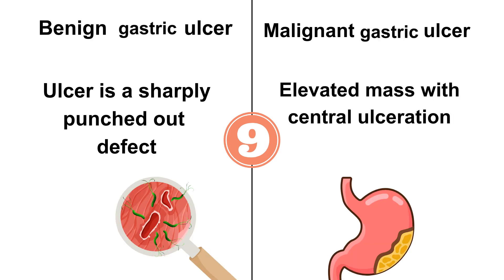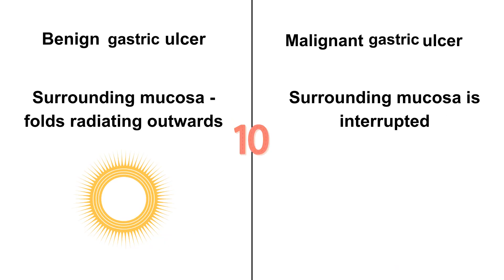In benign, the ulcer appears as a sharply punched-out defect, while in malignant it may be an elevated mass with central ulceration. In benign, the surrounding mucosa will form folds radiating outwards, while in malignant the surrounding mucosa will be interrupted.